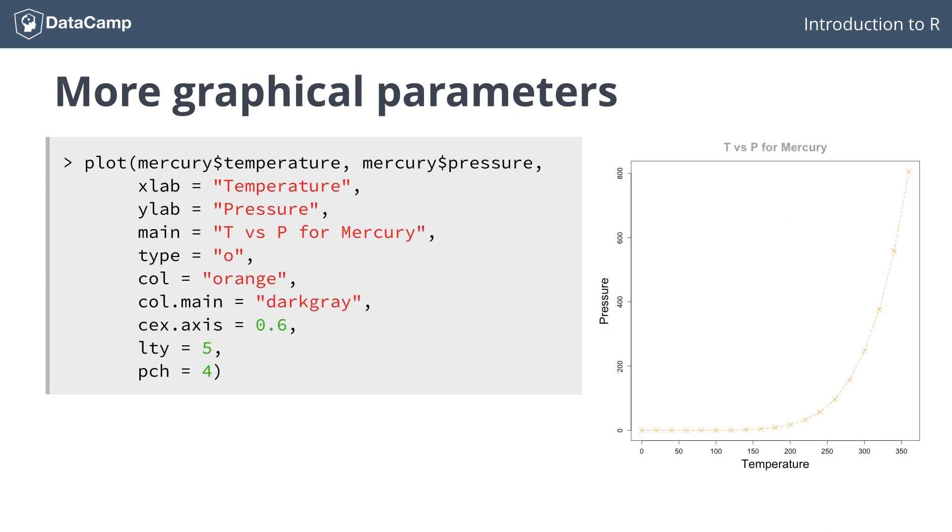You already know the first five graphical parameters. Similar to the col argument, the col.main argument specifies the color of the main title. There are also other col.arguments to set the color of other elements in your plot.